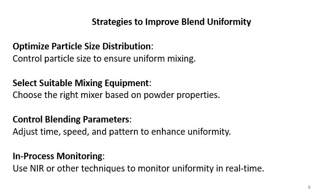Strategies to improve blend uniformity: optimize particle size distribution and maintain control to ensure uniform mixing. Select suitable mixing equipment — choose the right mixer based on powder properties. Control blending parameters by adjusting blending time, speed, and pattern to enhance uniformity. Use in-process monitoring with NIR or other techniques to monitor uniformity in real time.